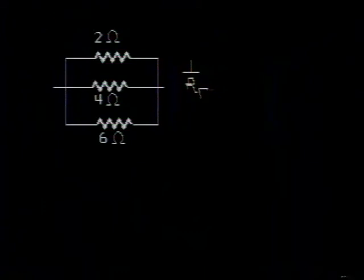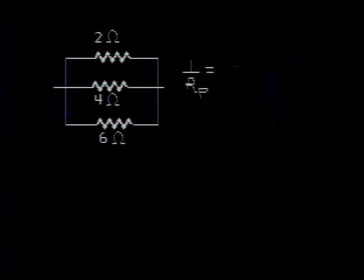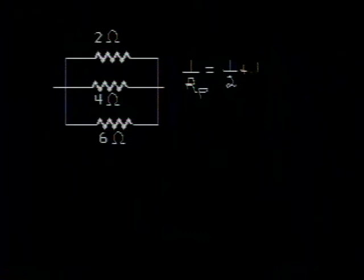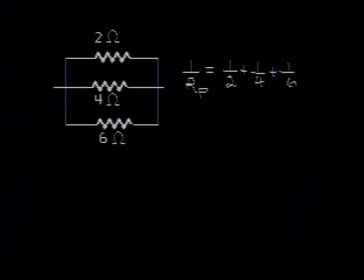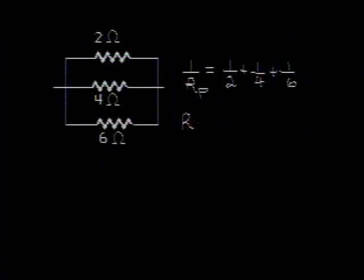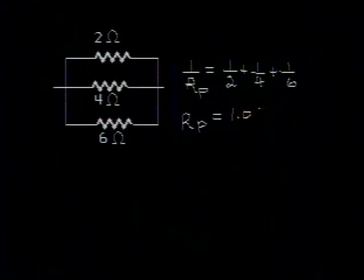Calling it R sub P, the reciprocal of that resistance is the sum of the reciprocals of the individual resistors. So it's one over two plus one over four plus one over six, all of these in ohms. I'll let you add those reciprocals and then take the reciprocal of the result and confirm the fact that R sub P when rounded to three significant figures should give you 1.09 ohms.